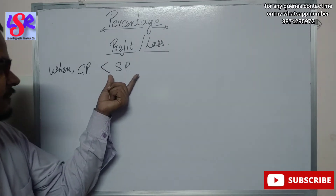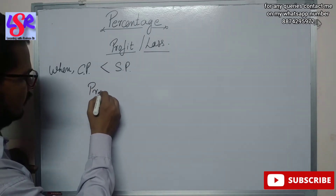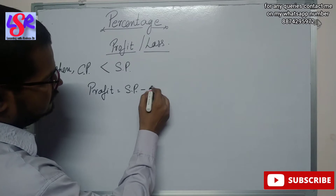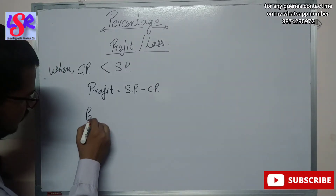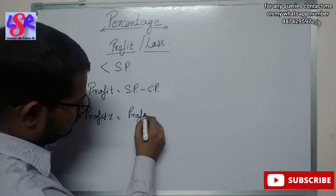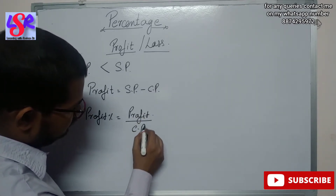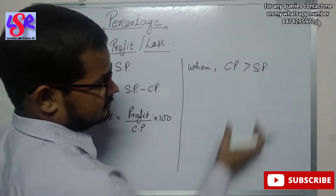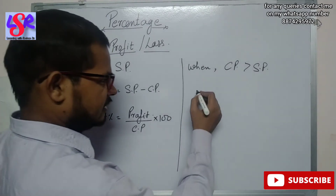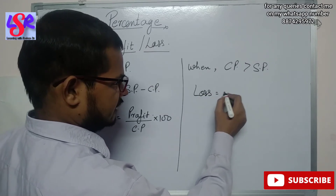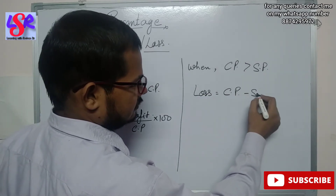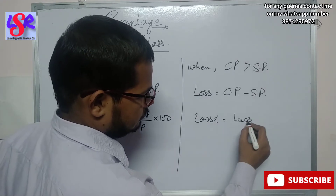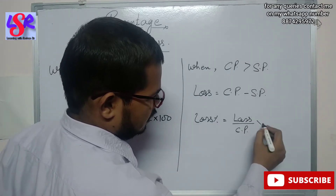When CP is smaller than SP, in that case we face a profit, which equals SP minus CP, and the profit percent equals profit upon CP into 100. And when CP is greater than SP, we face a loss, which equals CP minus SP, and the loss percent equals loss upon CP into 100.